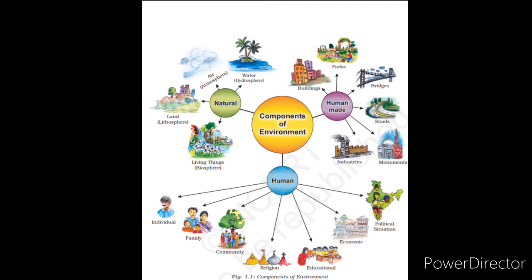The third component of environment is human environment. Human beings interact with the environment and modify it according to their need with the help of education, health care, technology, etc. And they have made several new things like politics, religion, economy, family, etc. These are not present in our nature already — we have added them in our society. Human beings made them as a part of our life, our society.